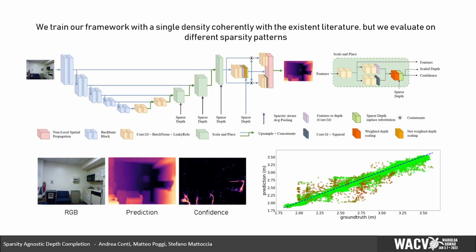This behavior is embedded in the scale and place module, the green block. Few convolutional layers predict a dense depth map and per-pixel confidence. Then, a weighted linear scaling is applied to match the scene scale, and the sparse depth points are applied in place to the densified depth map, assigning to them the highest confidence value. The confidence map helps to achieve a better scaling and to locate the sparse reliable measurements in the densified output. Finally, a non-local spatial propagation head is applied to boost performance.